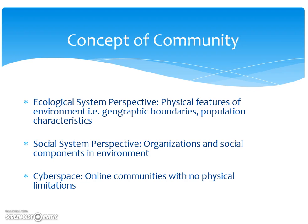There are three different ways we can look at the concept of community. The first is what we call the ecological system perspective — the physical features of the environment: geographic boundaries, population characteristics. This is looking at what we actually see. Is it mountainous? Is it flat? Is it rural? Is it urban?